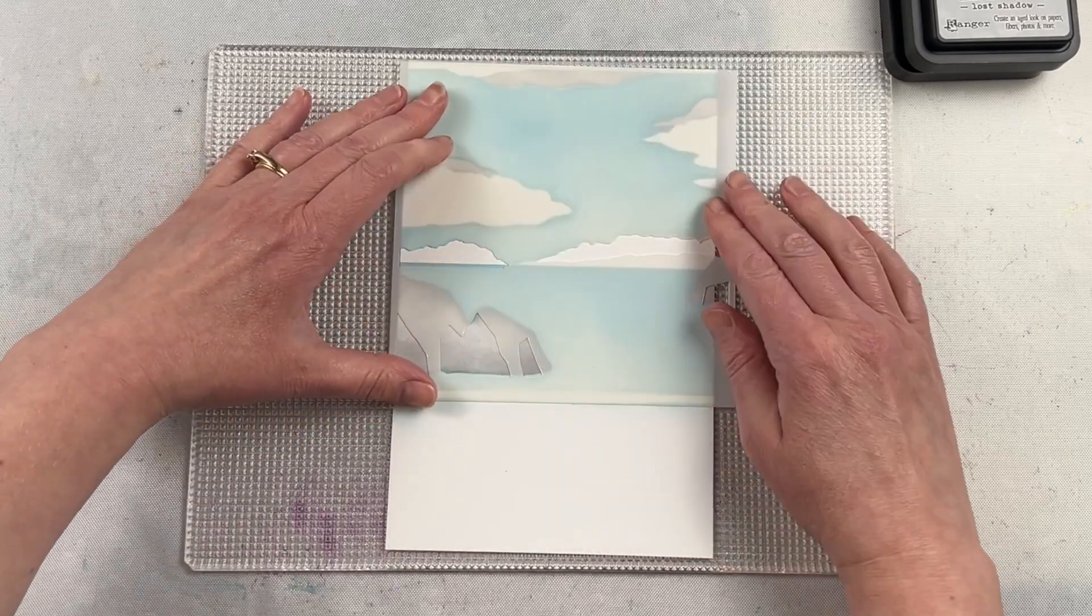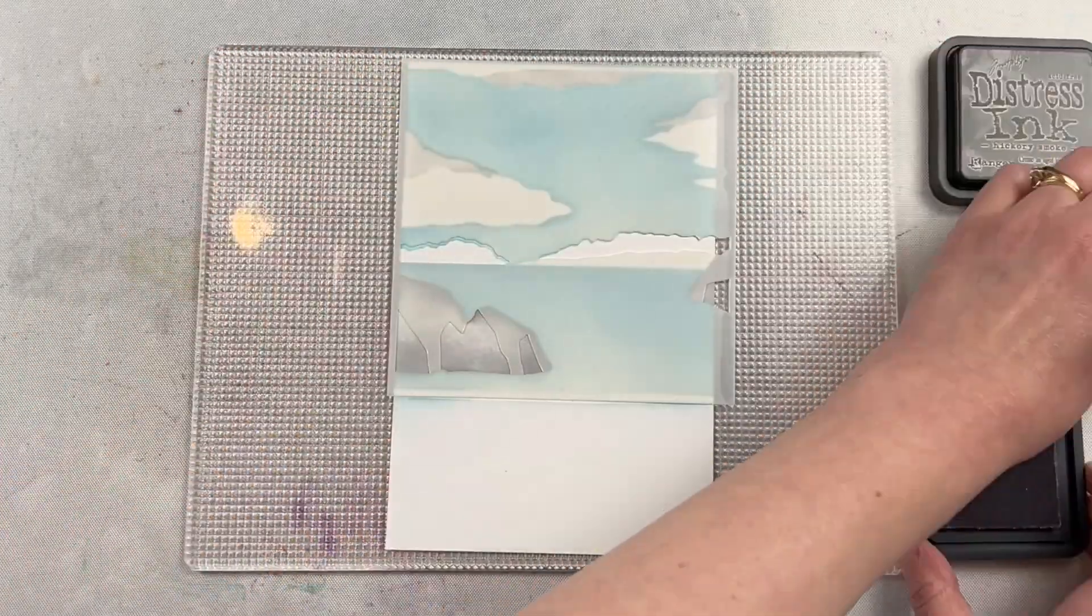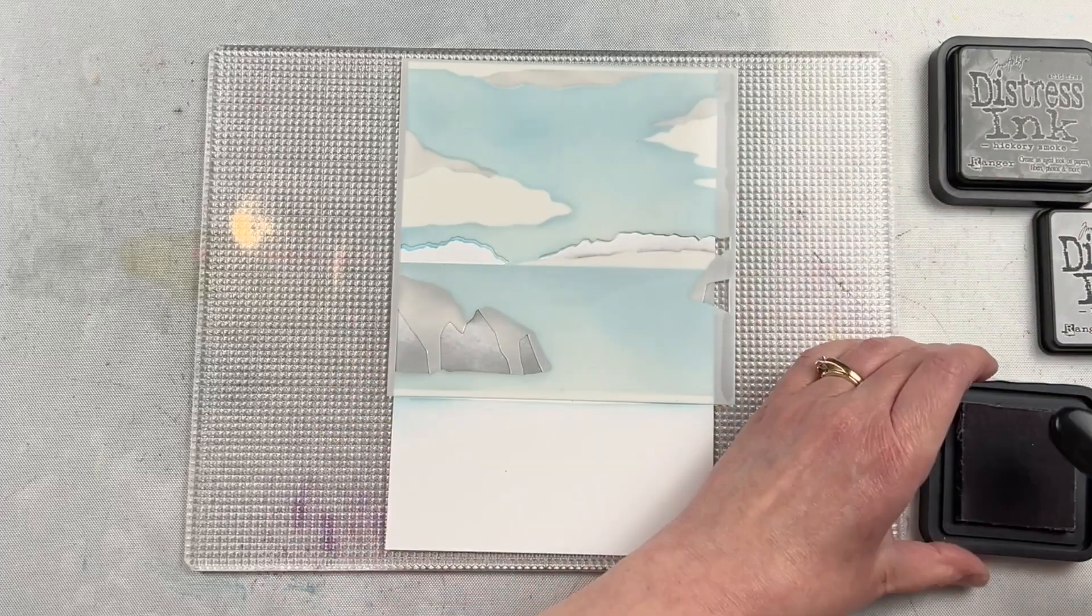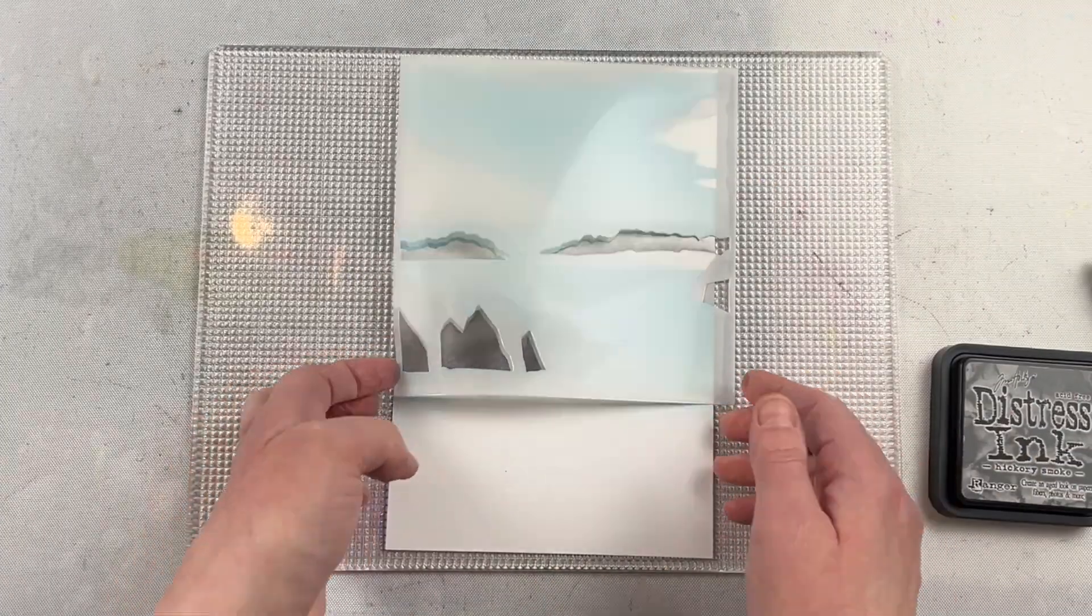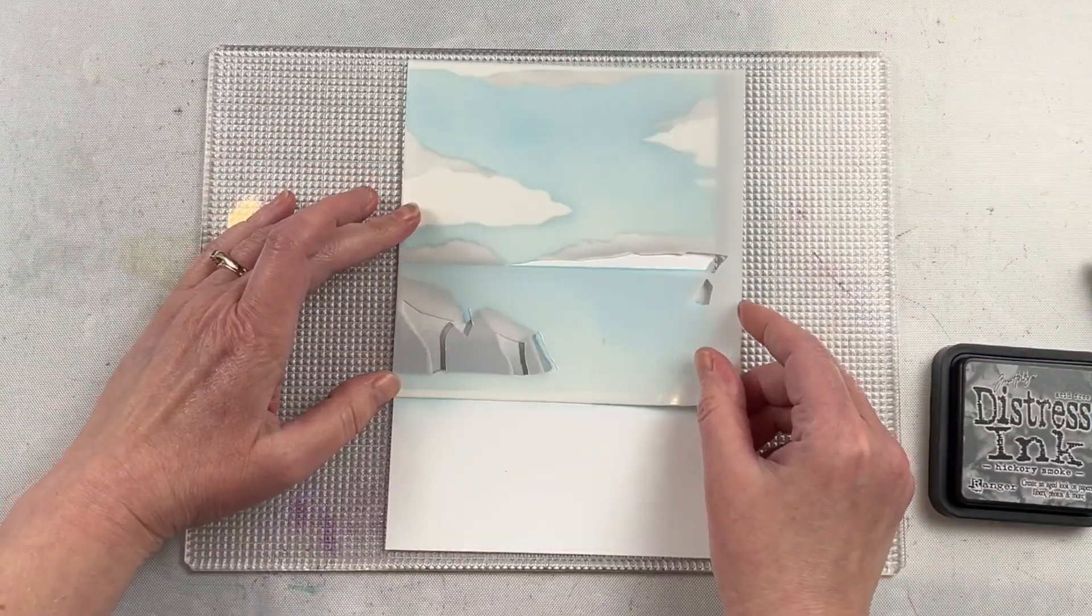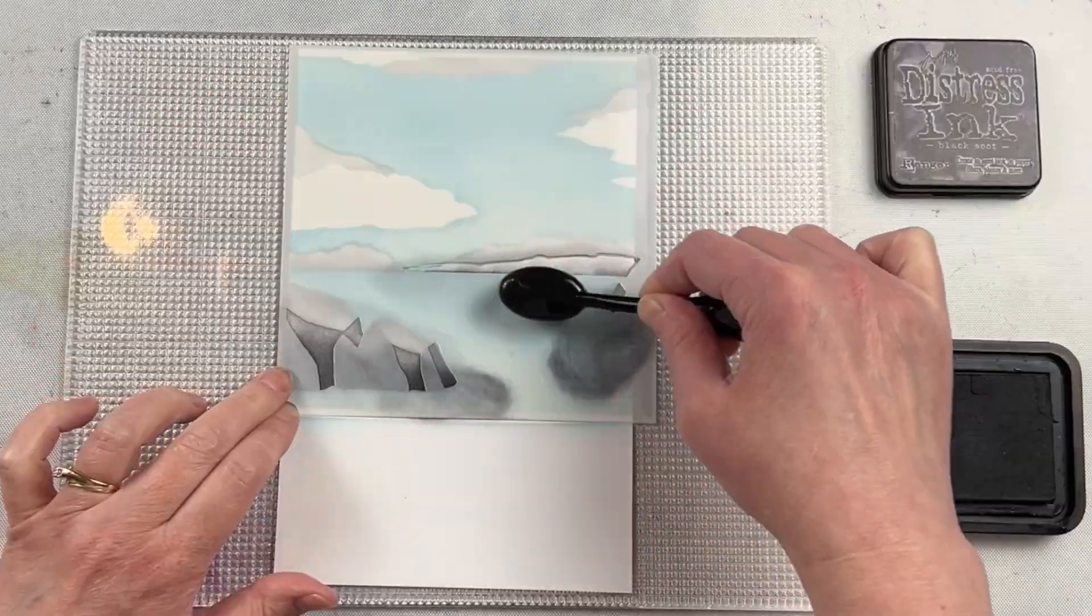The final result is a background that is 6x6, so it makes it perfect if you want to make both horizontal and vertical cards with this background. You can cut it whichever way suits the project that you're working on.